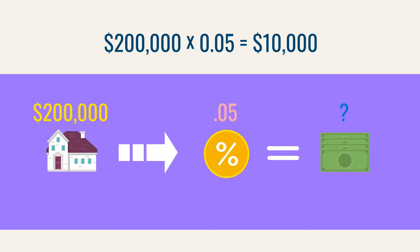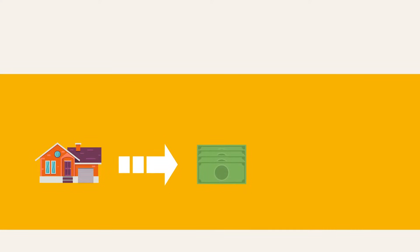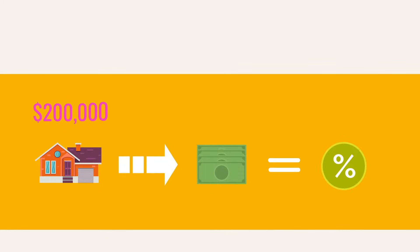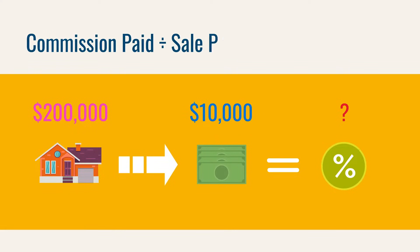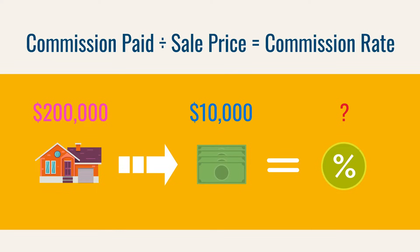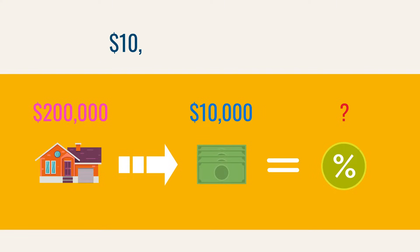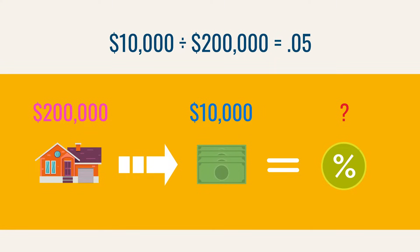The exam won't always give you the same information to work with. Here's how to solve a commission problem where you are given the selling price and the commission paid, and need to figure out the commission rate. A house is listed for $200,000; the seller pays $10,000 commission on the sale. What commission rate did the seller agree to pay? To find the commission rate, use: commission paid divided by sales price equals commission rate. $10,000 divided by $200,000 equals 0.05. Multiply by 100 to get 5%.